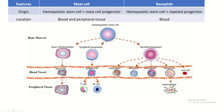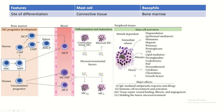The hematopoietic stem cell first forms the myeloid progenitor, and from the myeloid progenitor the basophil cell is formed — it is one of the blood cells. The site of differentiation of the mast cell is the connective tissue, while the basophil's site of differentiation is the bone marrow.